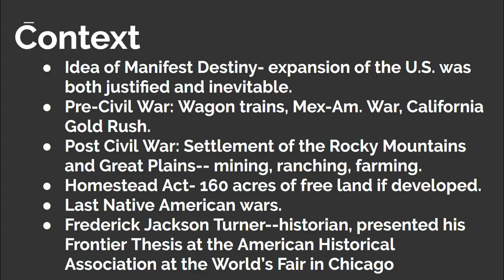There were two eras of this expansion. In the pre-Civil War era, wagon trains followed famous trails like the Oregon, Mormon, and Santa Fe across the Great Plains into the Rocky Mountains and West Coast. Some also braved a long sea journey around the Straits of Magellan at the tip of South America and up to the West Coast of California, hoping to seek and find riches during the California Gold Rush.